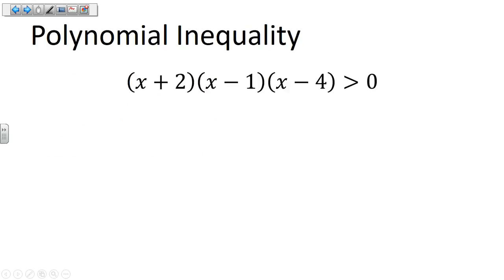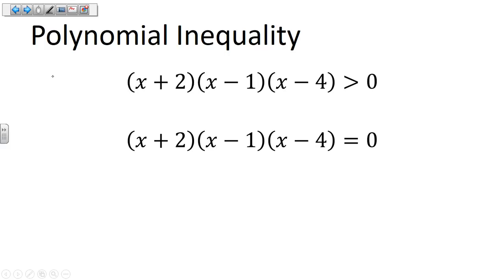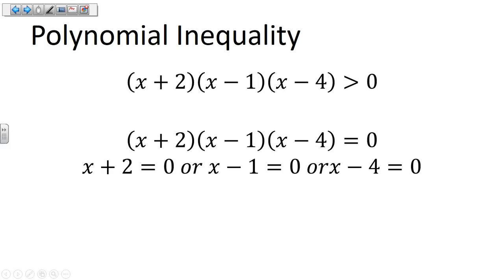Starting out with a factored polynomial inequality, the reason it's nice that this is given to us factored is just like when we were solving polynomials. We're going to look at this as a polynomial equation where we're solving the polynomial equals zero. Since it's factored, all I need to do is set each factor equal to zero separately. So I get x plus two equals zero, or x minus one equals zero, or x minus four equals zero, giving us zeros at negative two, one, and four.